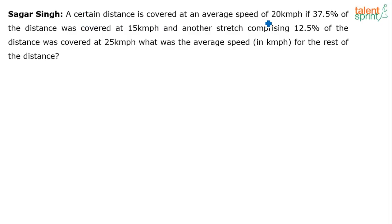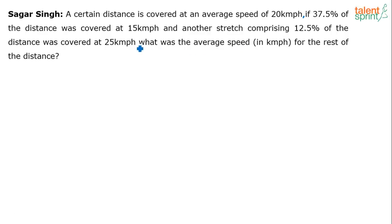A certain distance is covered at an average speed of 20 kilometers per hour. If 37.5% of the distance was covered at 15 kilometers per hour and another stretch comprising 12.5% of the distance was covered at 25 kilometers per hour, what was the average speed in kilometers per hour for the rest of the distance?